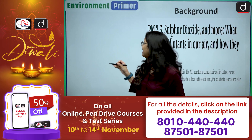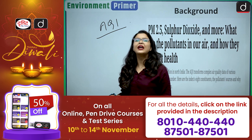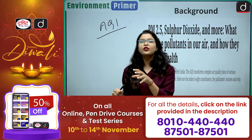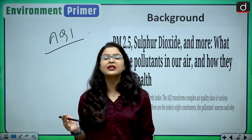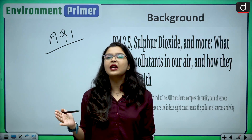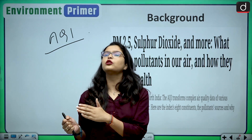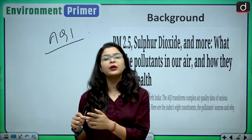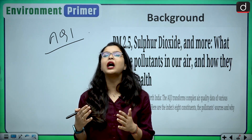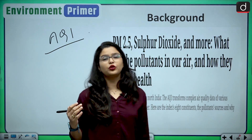Air pollution is measured by AQI, or the Air Quality Index. What AQI does is it converts complex data of various air pollutants into a single number. We will analyze what are the major air pollutants causing high air pollution in cities like Delhi and Mumbai, and we will also see the health hazards we are being exposed to by these major air pollutants.